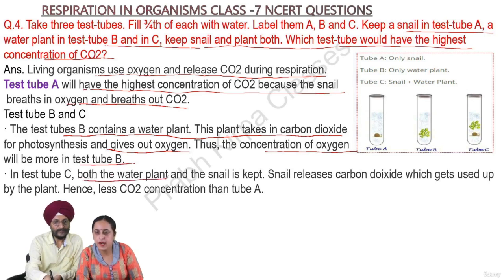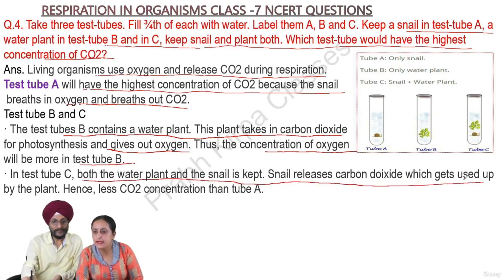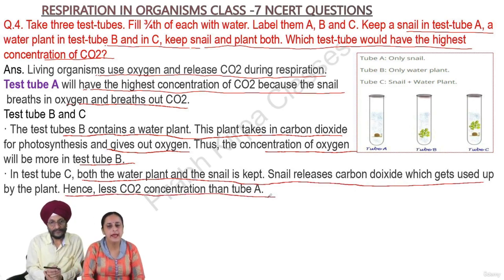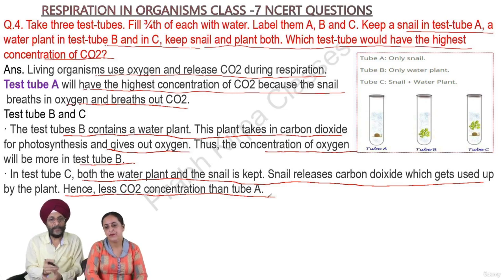In test tube C, both the water plant and the snail are kept. The snail releases carbon dioxide which gets used up by the plant. Hence, test tube C has less CO2 concentration than tube A.